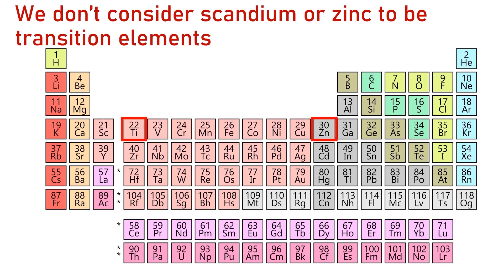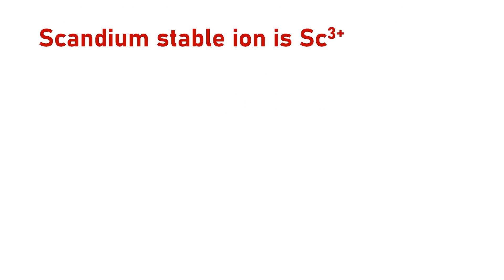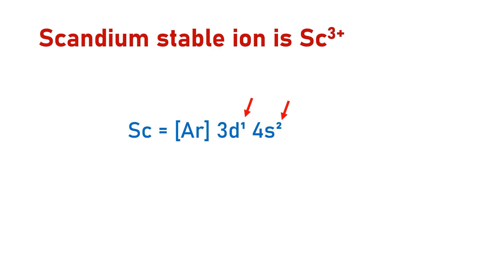So why wouldn't we consider scandium or zinc to be transition elements? For elements to be considered transition elements, they need to form a stable ion with a partially filled D subshell. For scandium, it has one electron in the 3D subshell and two electrons in the 4S subshell.